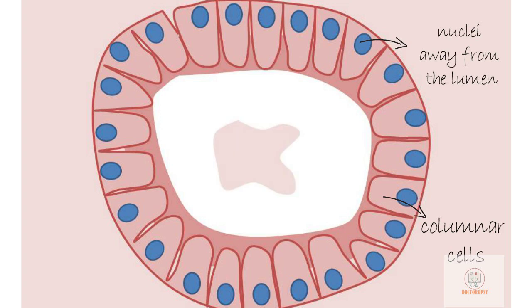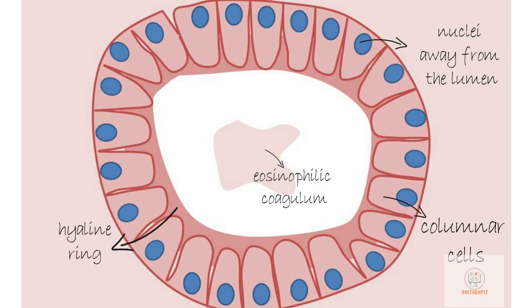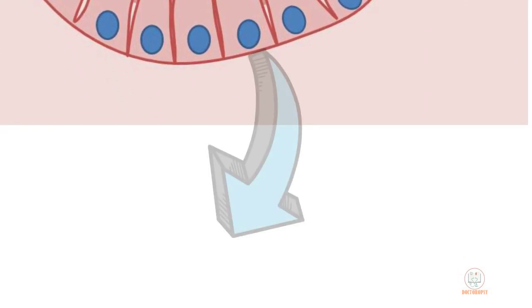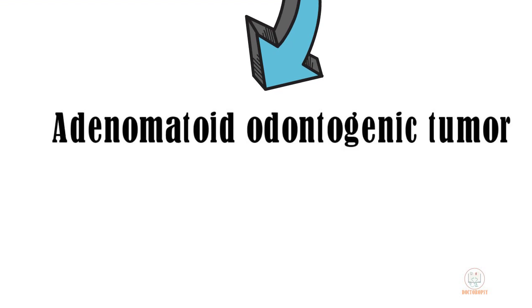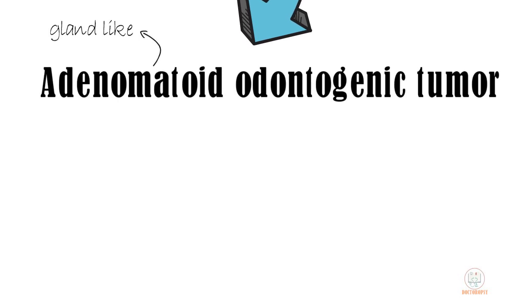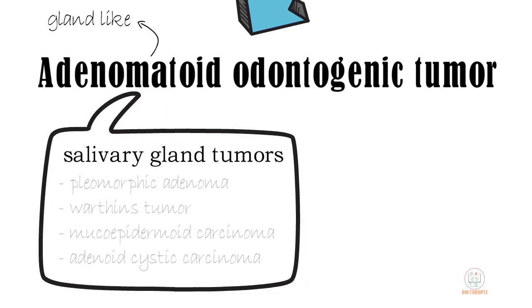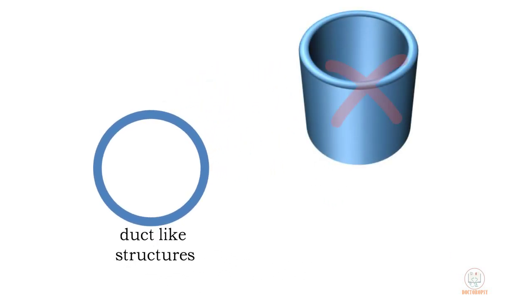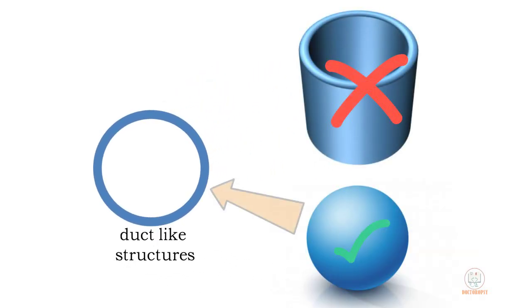The duct-like structures are formed of a single layer of columnar or cuboidal cells. The nuclei of these cells are oriented away from the lumen. The lumen may be empty or may have some eosinophilic material, and is frequently lined by an eosinophilic rim known as the hyaline ring. It is these duct-like structures which give the term 'adenomatoid' to the tumor name, as such structures are seen in glandular tumors like those of salivary glands. Studies have shown that these structures are not actually ducts but rather closed spherical cysts.